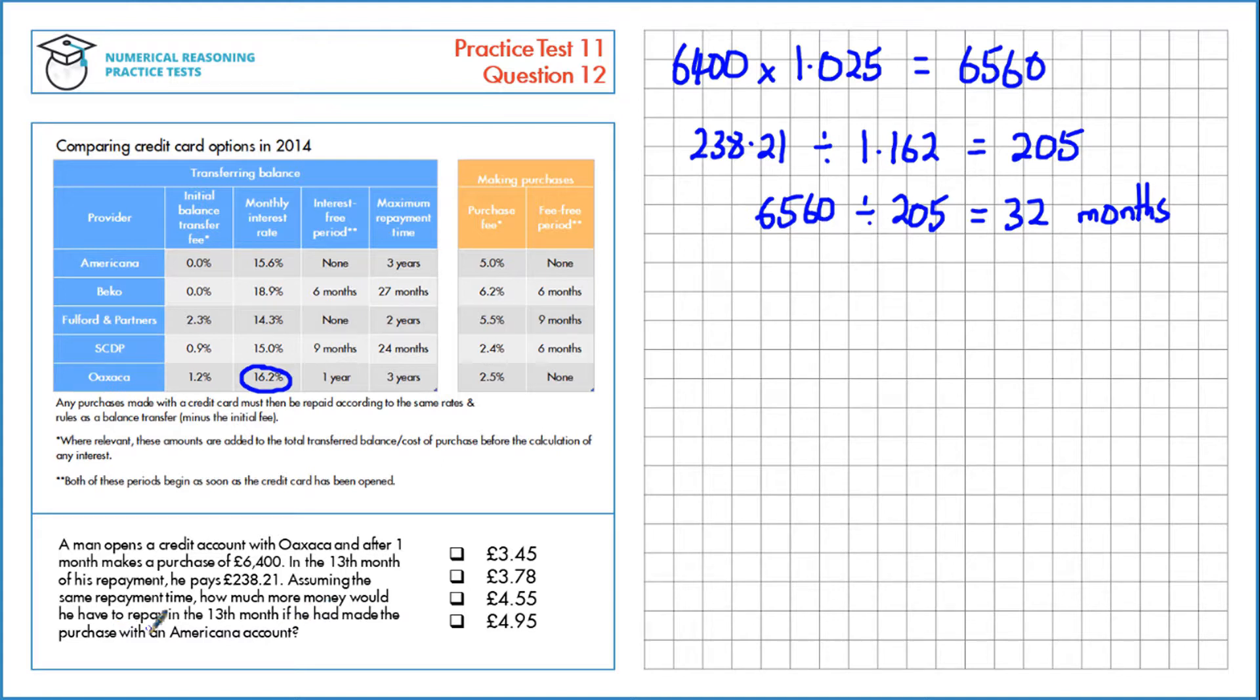How much more money would he have to repay in the thirteenth month if he'd made the purchase with an Americana account? So let's make the calculation for Americana. We have a purchase fee of 5% this time, so that's more. £6,400 times 1.05 is £6,720.